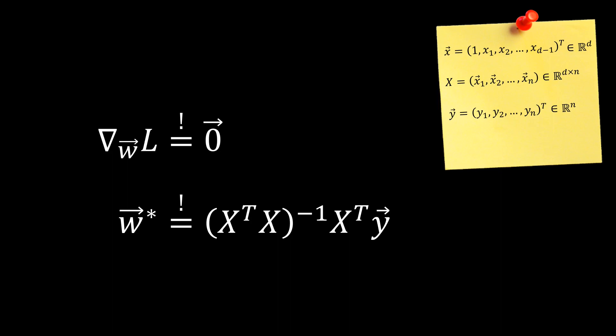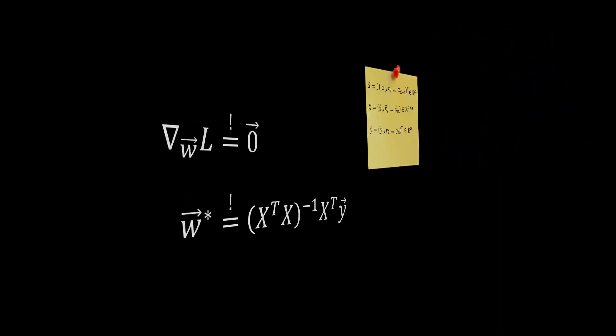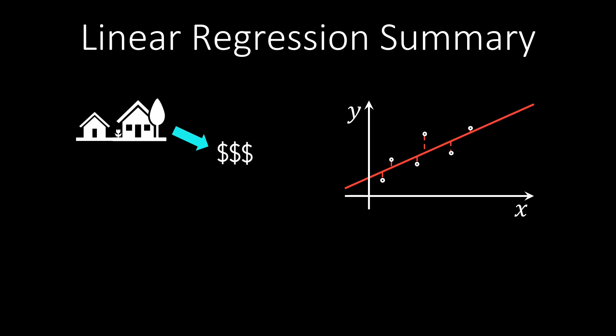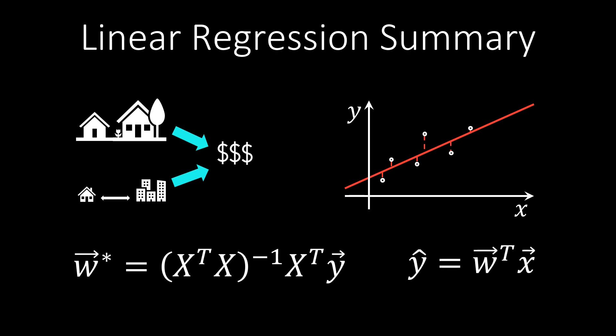Let's summarize the main insights of this video. We have looked at linear regression, or how to estimate weights based on observed data. For a single input dimension, we can visualize the error of the linear approximation. Minimizing the squared error over all data points gives us the ordinary least square solution. For multiple input dimensions, a similar deduction can be made to get a closed-form solution for the vector of weights. This weight vector can then be used to make predictions for any vector of input features X.